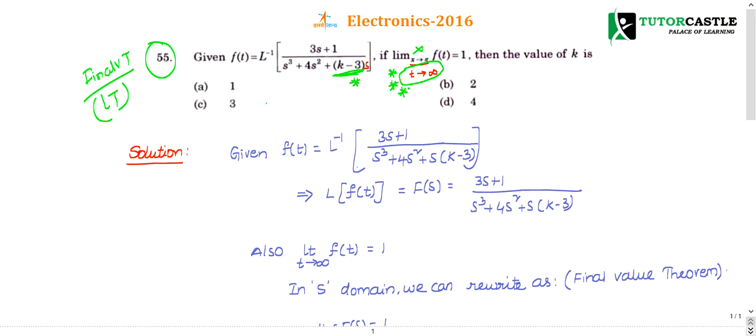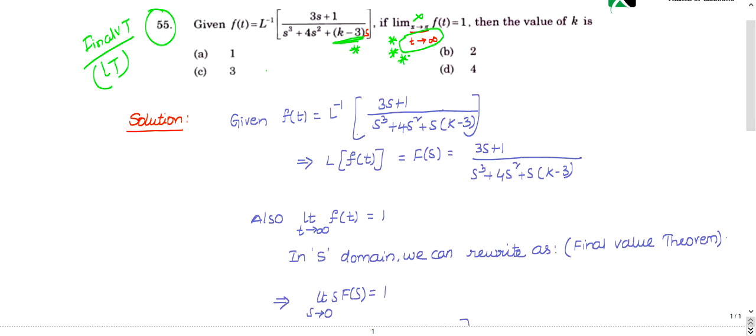Let's see what the final value theorem is in mathematics or Laplace transform. He has given f(t). I have taken it as is and included s. Bringing this Laplace to the other side, it becomes L{f(t)}, which is the Laplace of f(t), which is f(s), a function in s.